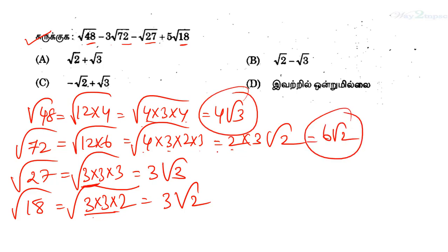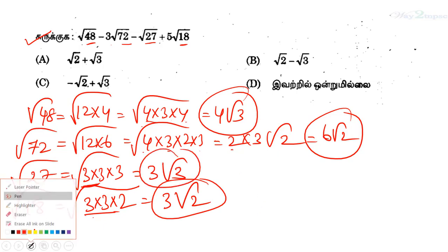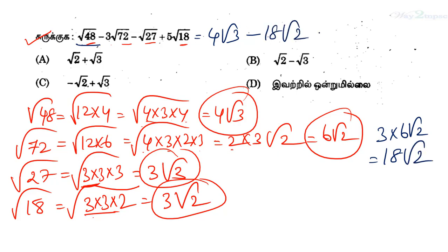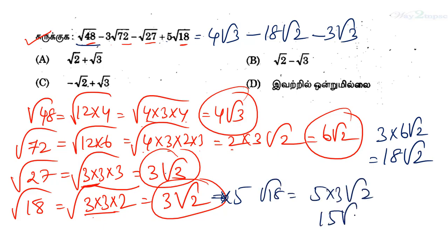Now we substitute the values. Root 48 becomes 4 root 3. Then minus 3 times root 72, which is 6 root 2, giving us minus 18 root 2. Minus root 27 becomes minus 3 root 3. Plus 5 root 18 becomes 5 into 3 root 2, which is plus 15 root 2. Now we combine like terms: 4 root 3 minus 3 root 3, and minus 18 root 2 plus 15 root 2.